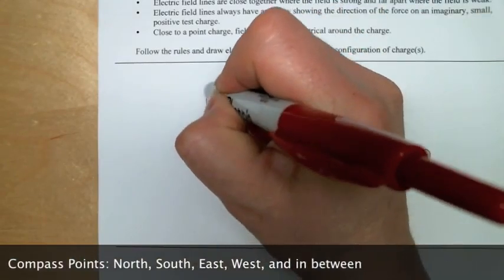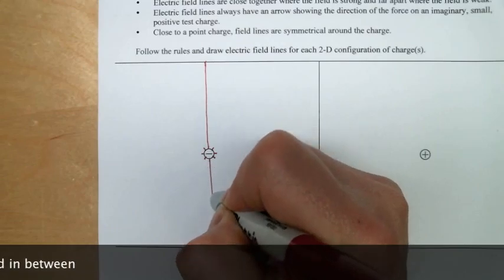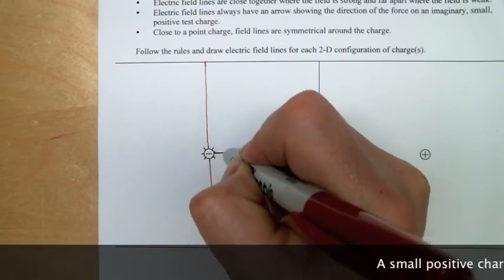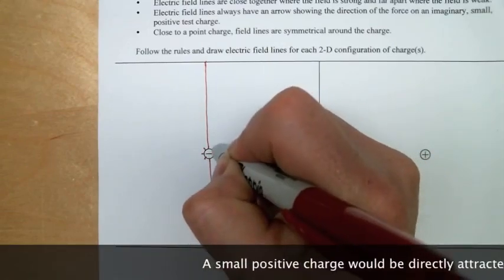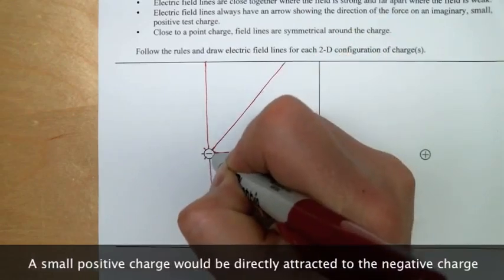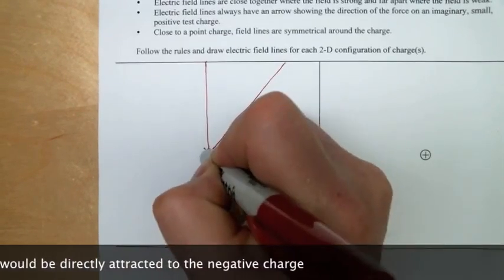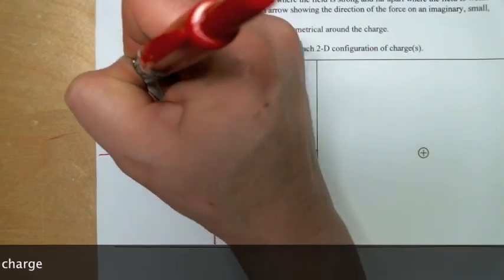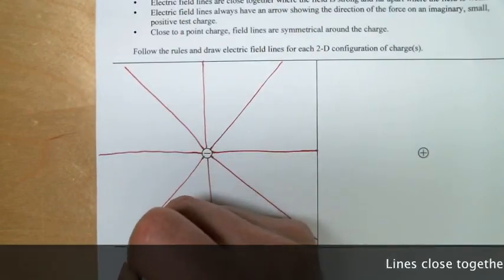Since the force from a single charged particle is always directly towards or away from the particle, in this case towards, I draw the lines from the starting point as straight lines. The last thing I'll do is add arrows showing that a small positive test charge will be attracted to the negative charge.